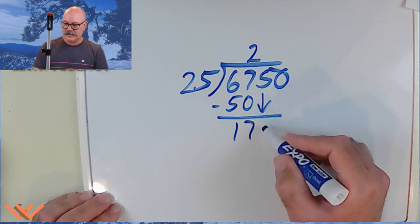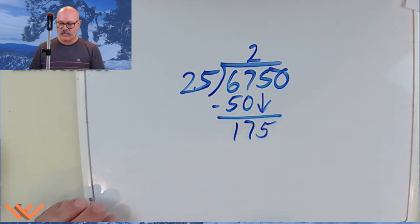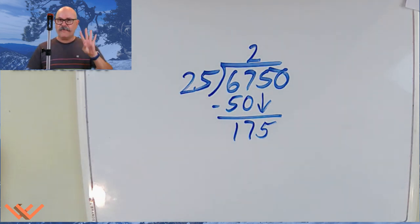Okay. And I'm going to bring that 5. So, 175. Well, I know that 4 25's, remember like 4 quarters, make 100 cents or $1. So, that's 100. And then 25 plus 25 is 50. And another 50.